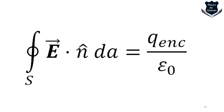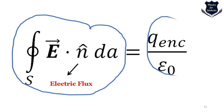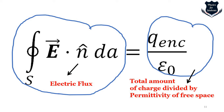The left-hand side of the Gauss's law equation, shown in blue, represents the electric flux — conceptually, the number of electric field lines passing through a closed surface. The right-hand side represents the total charge enclosed within that surface, divided by a constant called the permittivity of free space.